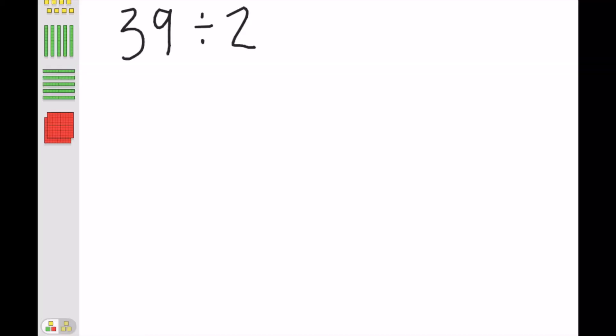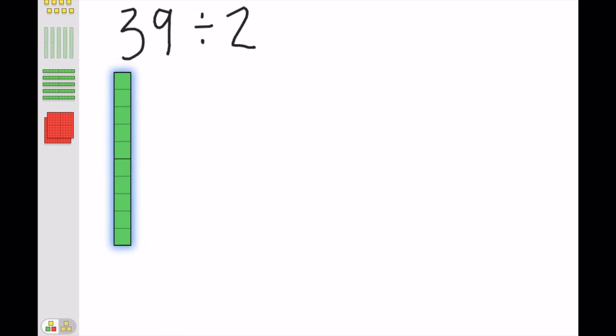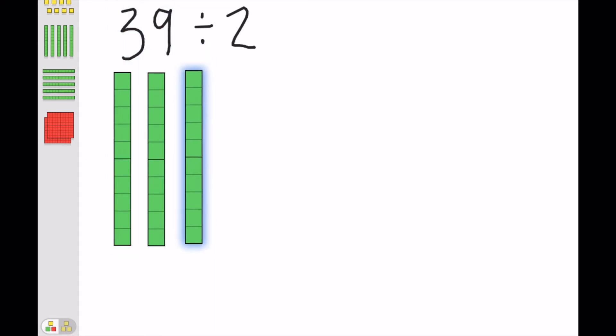So in this problem, we're doing 39 divided by 2. The first thing I'm going to do is model the 39. Three 10s and nine 1s. That's my 39, my total. So I need to model it right here.